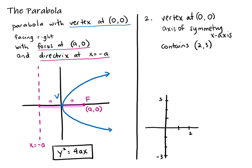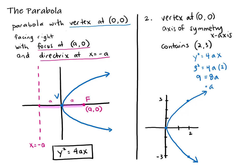For this next question, the vertex is at (0, 0) and it contains the point (2, 3). Because it has its axis of symmetry on the x-axis, it also contains the point (2, -3). We can sketch the parabola, but we don't know our a value, where the focus is, or where the directrix is. We do know which equation to use. Plugging the point into y² = 4ax: 3² = 4a(2), giving 9 = 8a, so a = 9/8. The equation is y² = 4(9/8)x, which simplifies to y² = (9/2)x.